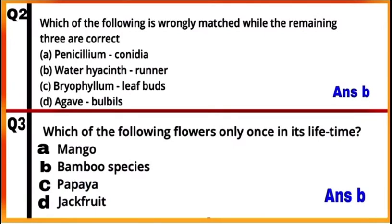Question 2: Which of the following is wrongly matched while the remaining three are correct? The wrong match is B. Water hyacinth is an example of offset and not runner. Offset is a sub-aerial modification of stem; it is like a runner but internodes are thick and short. The others are correctly matched: in Penicillium, conidia are asexual reproductive structures; in Bryophyllum, vegetative propagules are leaf buds; and in Agave, vegetative propagules are bulbils.